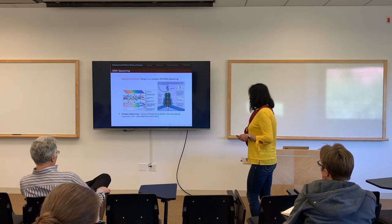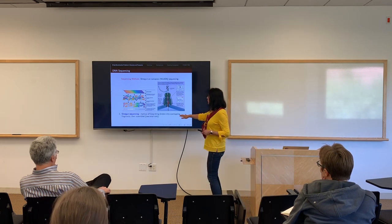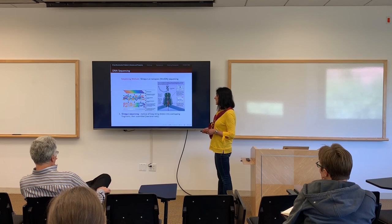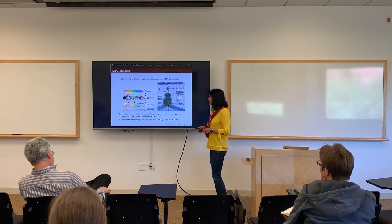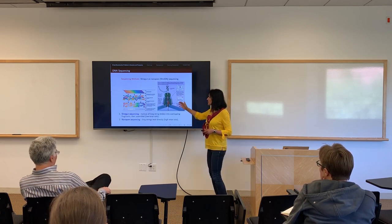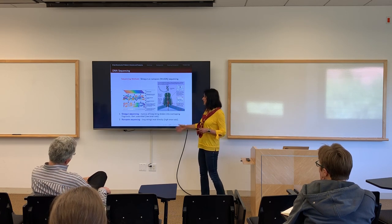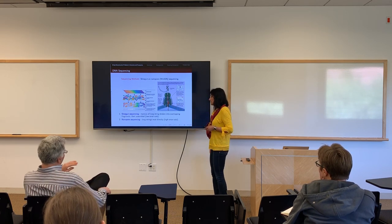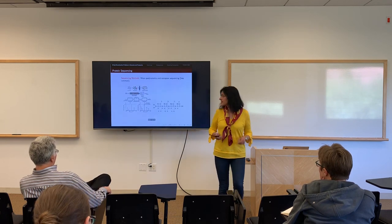Shotgun sequencing has the good property that it gives low error rates for the readout, while nanopore sequencing allows reading much longer lengths — fragments of length 15,000 and even longer — but they usually have higher error rates. So how do we read proteins? RNA can be detected in pretty much the same way as DNA, but how do we read the content of protein sequences? The method of choice is slightly different.